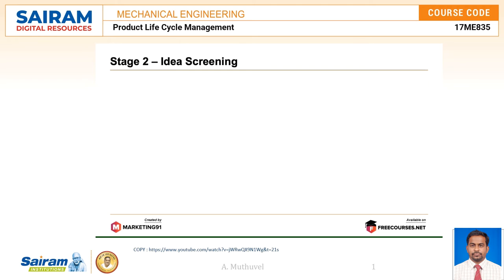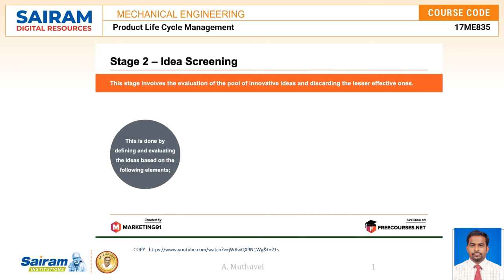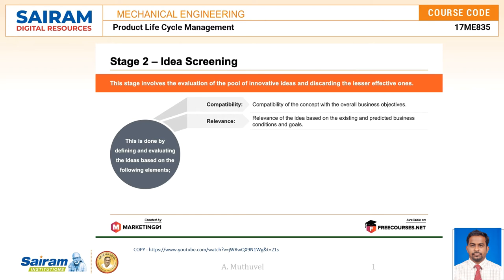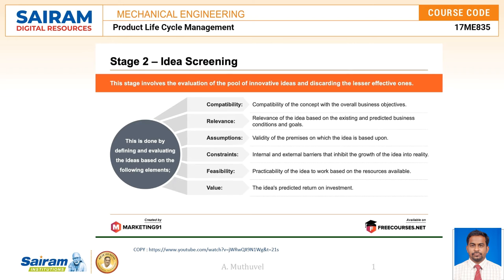Stage two is idea screening, which involves evaluating the pool of ideas and discarding the less effective ones. Ideas are evaluated based on: compatibility with overall business objectives, relevance based on existing business conditions, validity of the premises, internal and external barriers, practicality based on available resources, predicted return on investment, and internal or external risks that may limit the idea's progress.